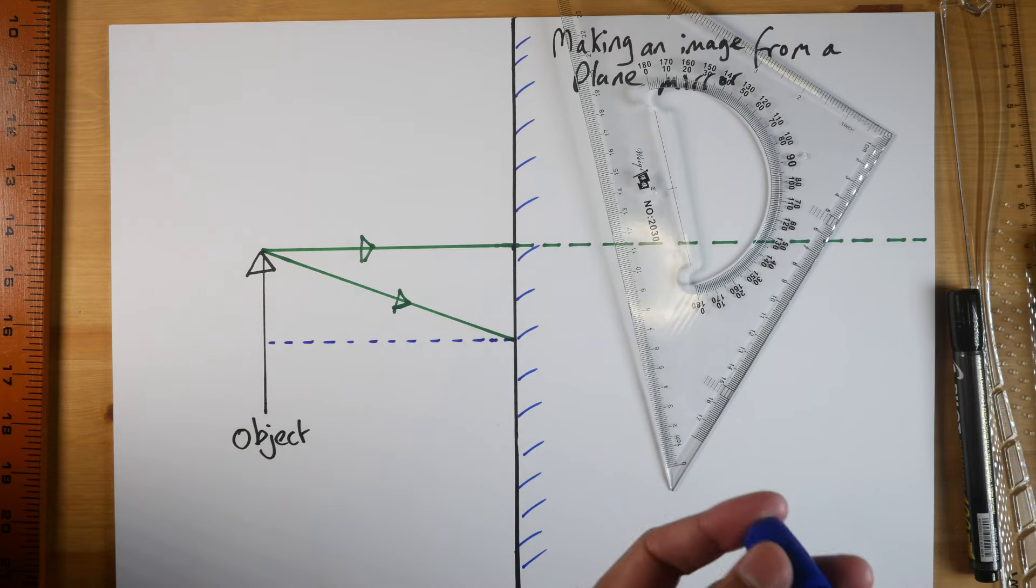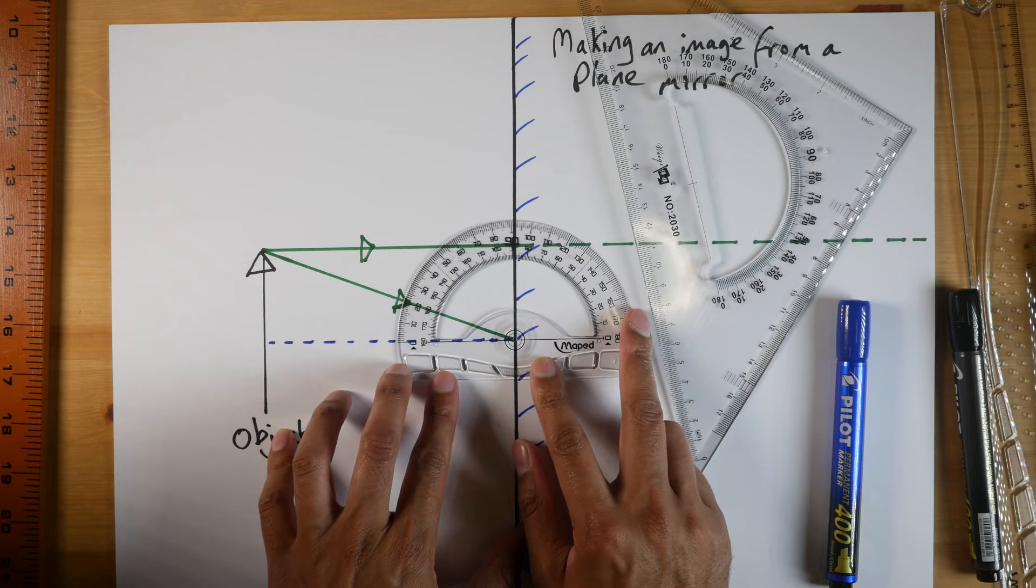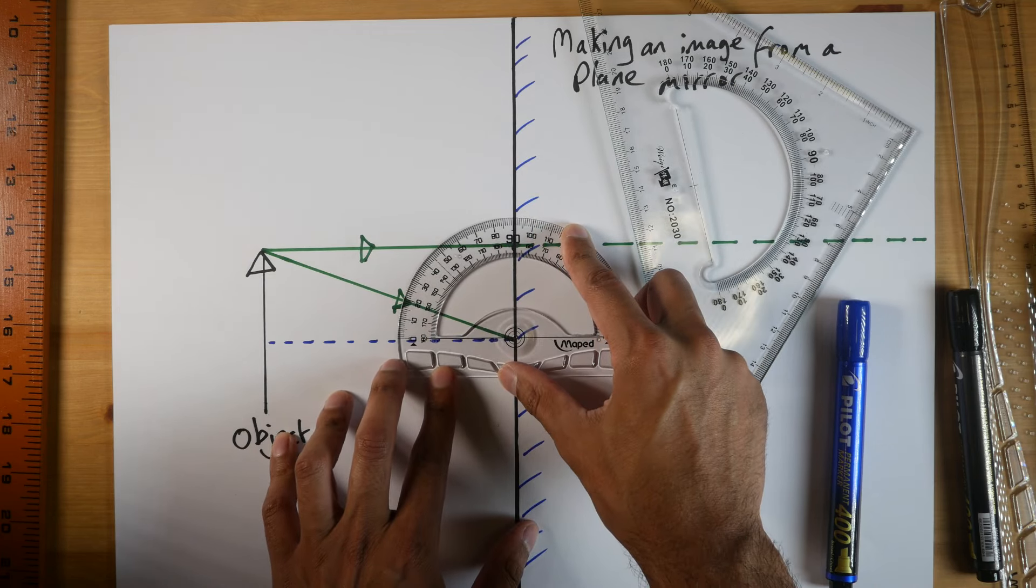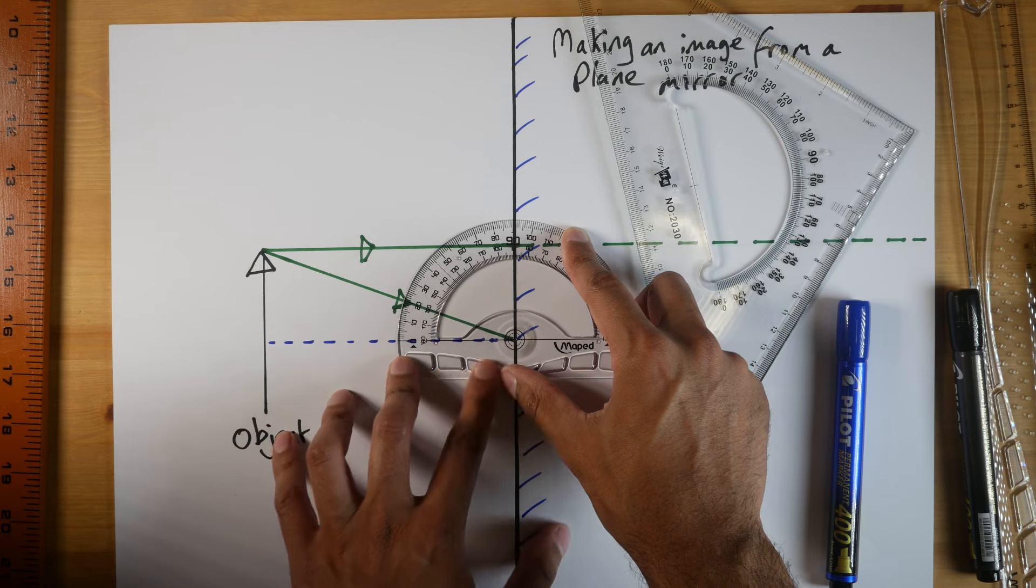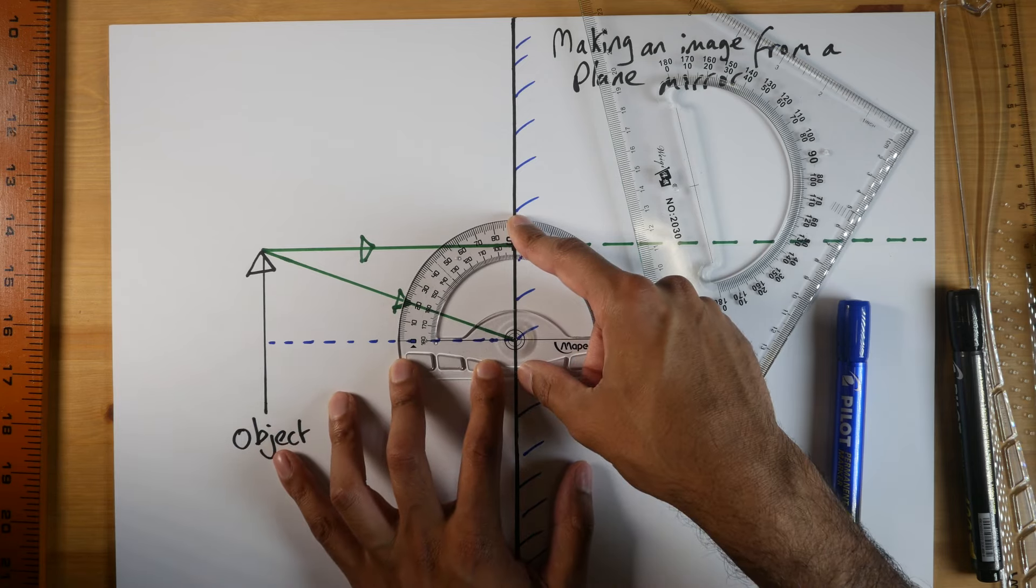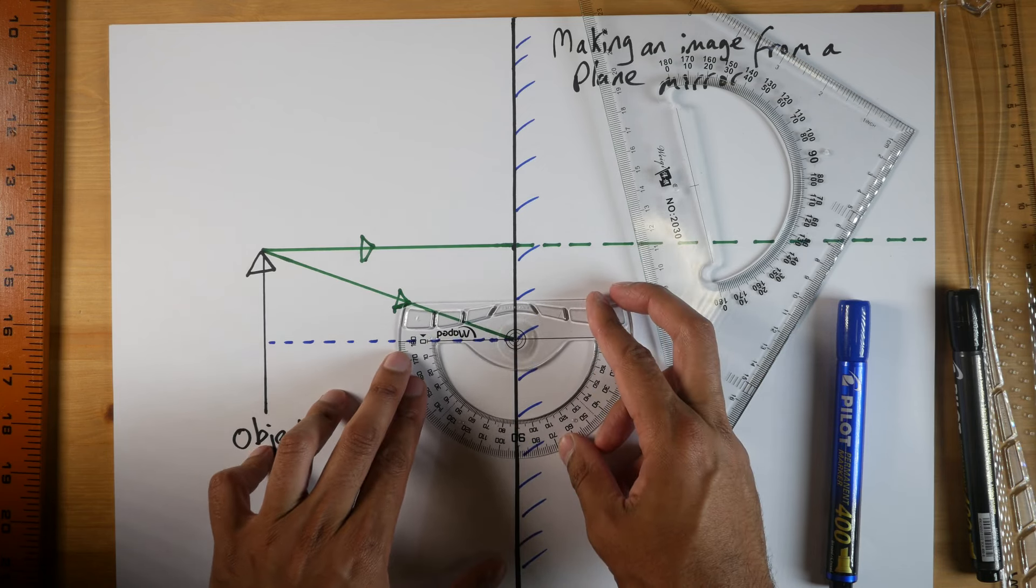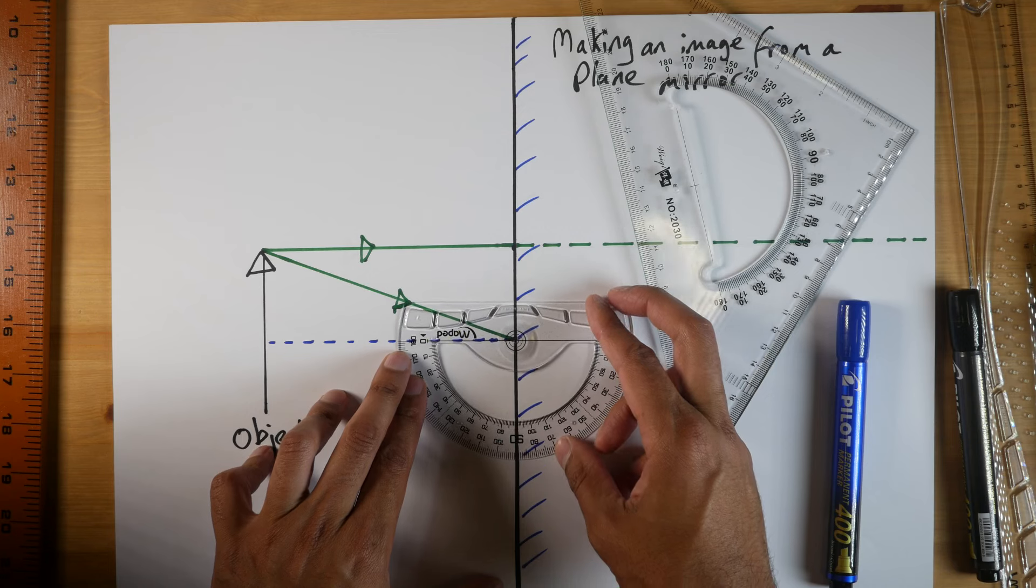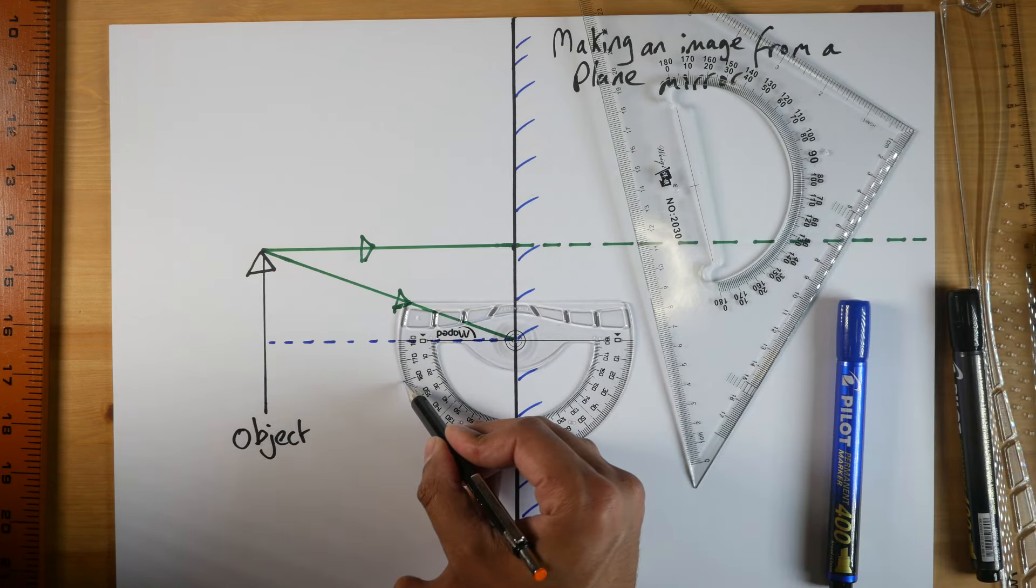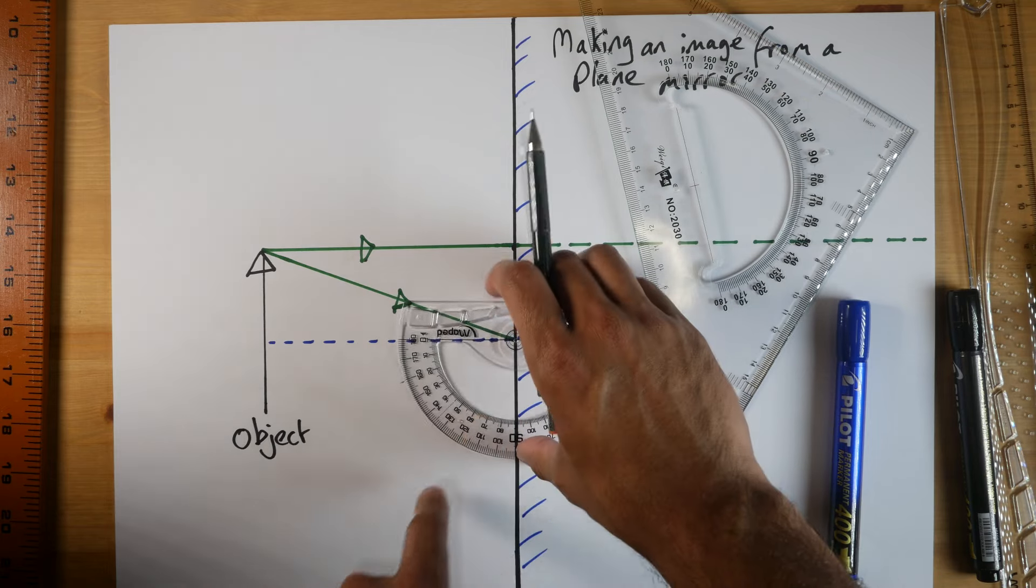The next step is to measure the angle. So make sure the 90 degree line is exactly on the plane mirror. And the zero degree mark is exactly where the normal line is. And you can see that this is 20 degrees. So I need to then flip it upside down. Make sure I line it up properly. And I'm going to make a pencil mark at 20 degrees, which is over here. So 0, 10, 20, like so.